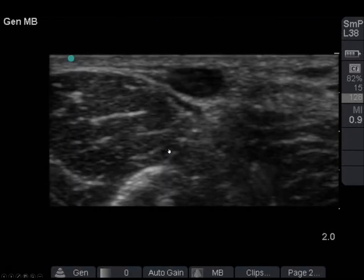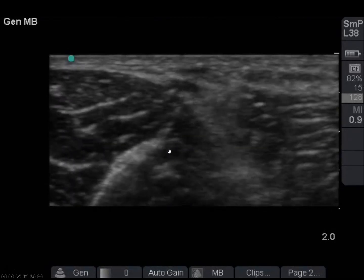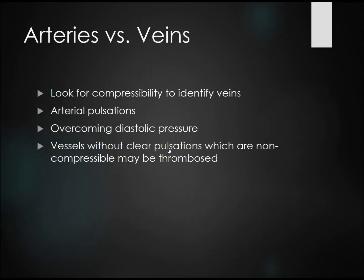Here's an example of a vein that's being compressed. How do we tell the difference between an artery and a vein? In general, we look for compressibility and also for arterial pulsation. You have to be careful, however, because it's possible to overcome the diastolic pressure of an artery and actually collapse it. Additionally, vessels without clear pulsations that are non-compressible may represent a thrombosed vein.